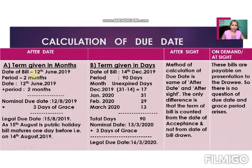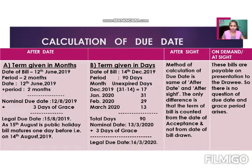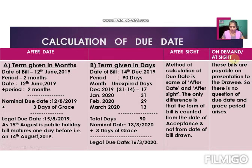There are three types of bills for calculation purposes: after date, after sight, and on demand or at sight bills. After date means whenever in the specimen we write '90 days after date.' Sometimes we may write '90 days after sight,' or sometimes the bills are not for a period — on demand, 'pay to me or my order,' or at sight, 'pay to me or my order.' These are the three types of bills according to dates.